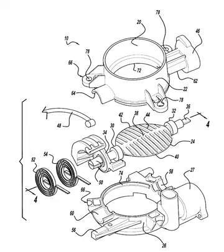On many cars, the accelerator pedal motion is communicated via the throttle cable, which is mechanically connected to the throttle linkages, which in turn rotate the throttle plate. In cars with electronic throttle control, also known as drive-by-wire, an electric actuator controls the throttle linkages and the accelerator pedal connects not to the throttle body, but to a sensor which outputs a signal proportional to the current pedal position and sends it to the ECU.